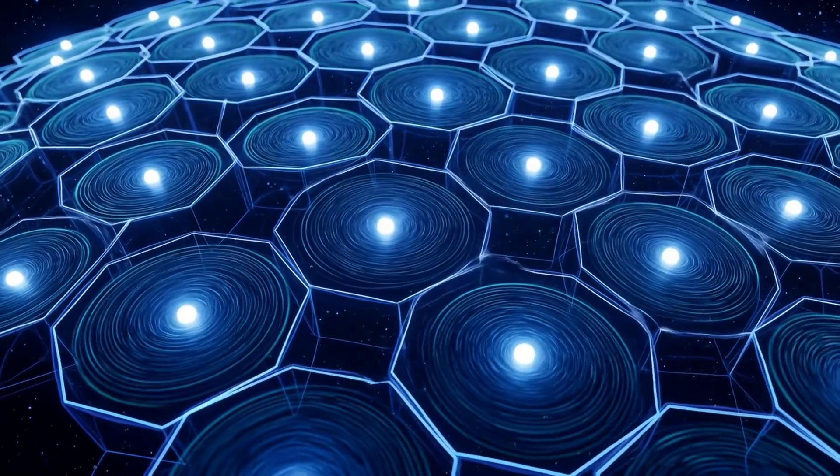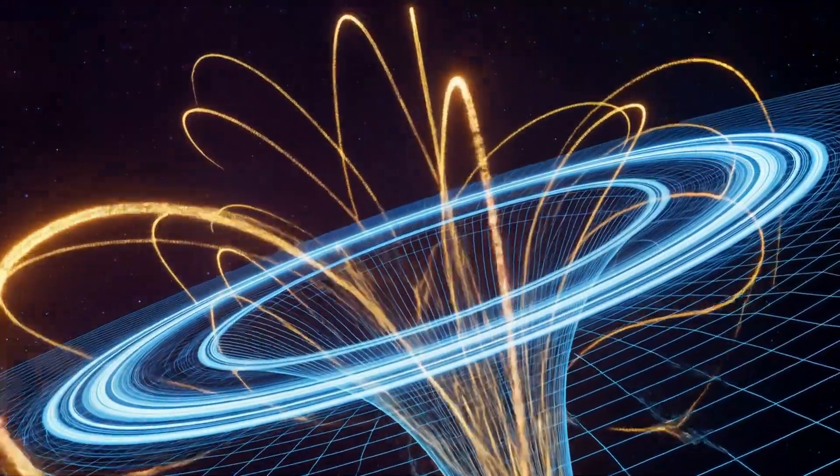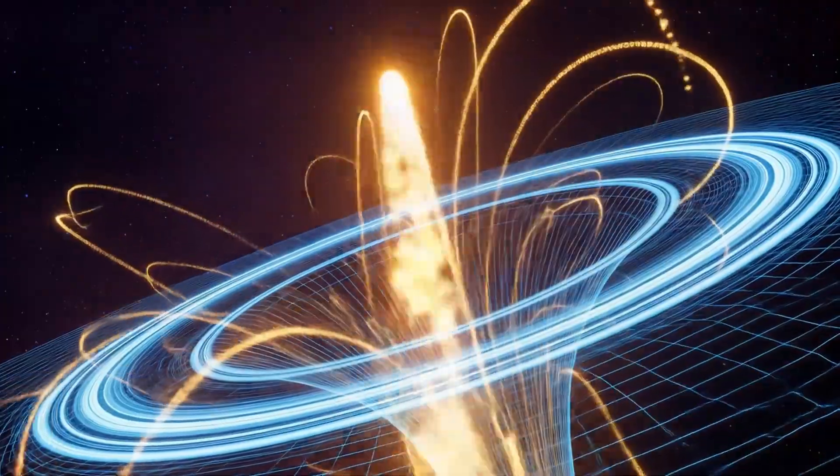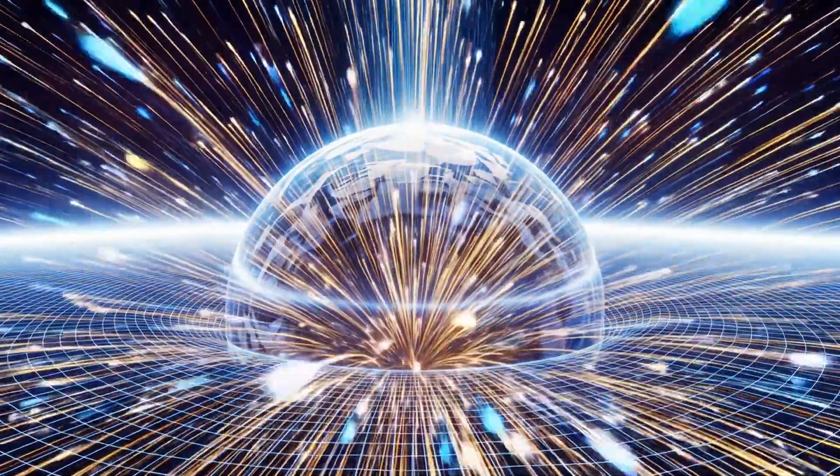When the fidelity of their entanglement exceeds the Bekenstein bound, the information density becomes so great that light can no longer escape its own geometry and the field collapses inward.